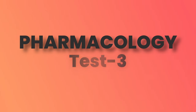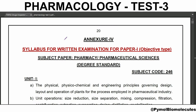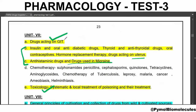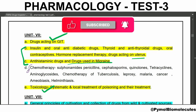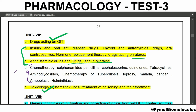Welcome back to PyMol Biomolecules. In this part we are going to see Pharmacology Test 3. The topic is chemotherapy - covering sulfonamides, penicillins, cephalosporins, quinolones, tetracyclines, aminoglycosides, chemotherapy of tuberculosis, leprosy, malaria, cancer, amoebiasis, and helminthiasis. We are going to see the MCQs for this topic.